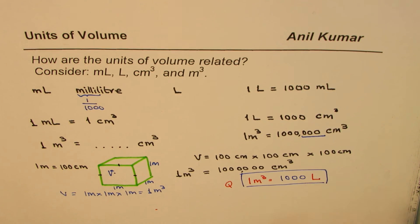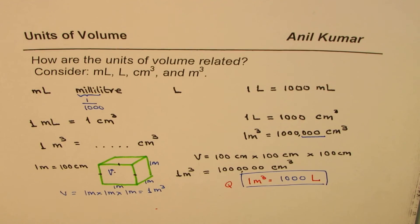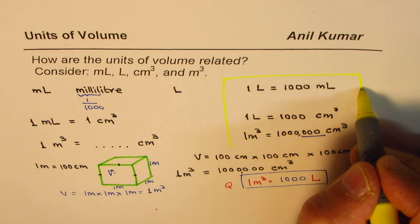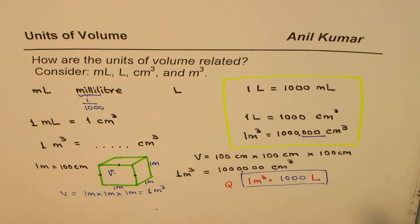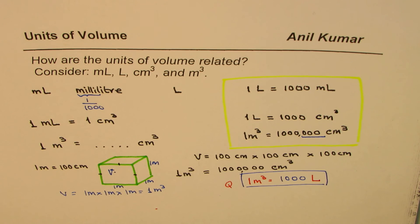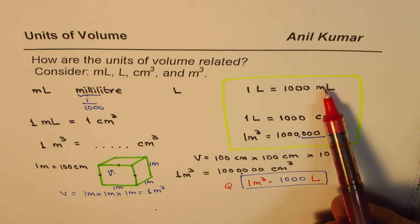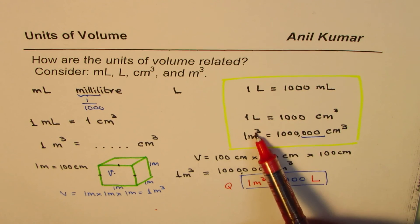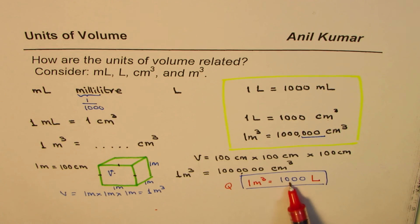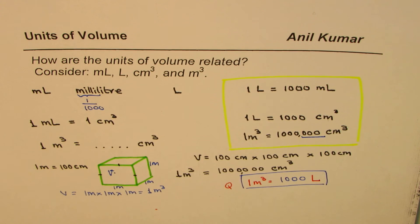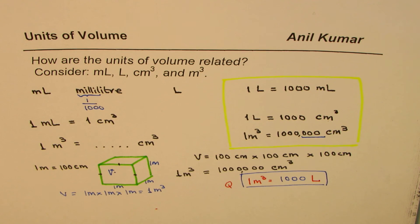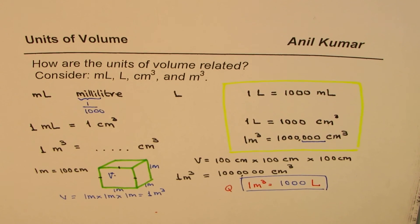So these are the four key relations for converting volume units: one liter is one thousand milliliters; one liter is one thousand centimeter cubes; one milliliter is the same as one centimeter cube; one meter cube is one million centimeter cubes; and one meter cube is one thousand liters. I hope that's absolutely clear. We'll do some examples based on these conversions. I'm Anil Kumar — please like, share, and subscribe, and feel free to post questions. Thank you and all the best.